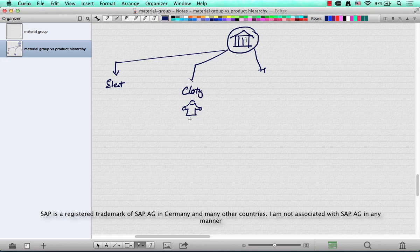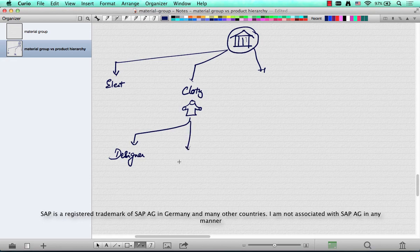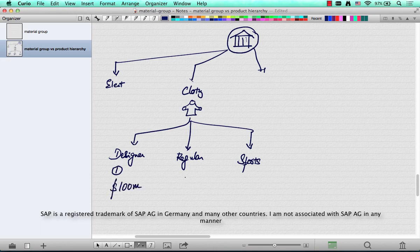In clothing, say there's designer wear, regular clothing, and sports wear. Designer is doing a revenue of say 100 million, regular is doing 50 million, and sports is doing 50 million.